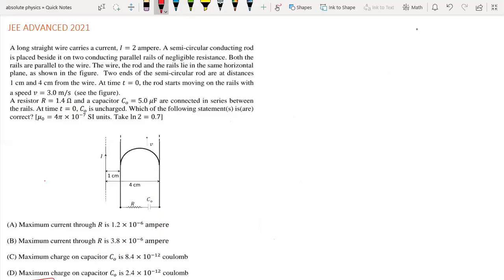Hi everyone, in today's lecture we are going to solve this question from JEE Advanced 2021. This is based on electromagnetic induction. The question says a long straight wire carries current I, and a semicircular conducting rod is